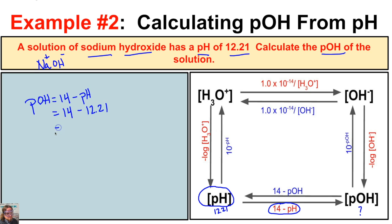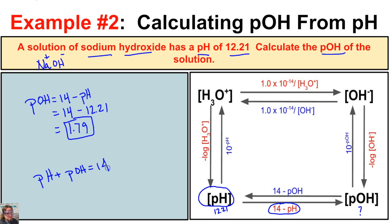When we put this in our calculator we get 1.79. So if the pH of our solution is 12.21, the pOH is going to be equal to 1.79, and that is because pH plus pOH is always going to equal 14.